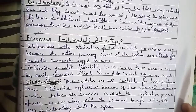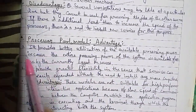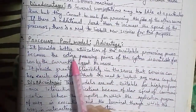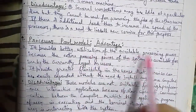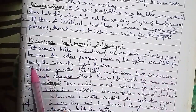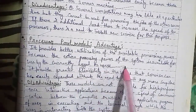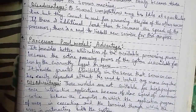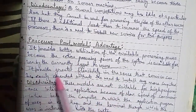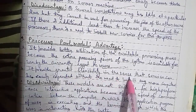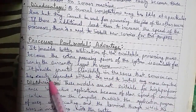The processor pool model provides better utilization of available processing power. Previously, the entire processing power of the system was only used by currently logged-on users, but now all available processing power can be utilized. It also provides greater flexibility in the sense that the service can be easily expanded without the need to install any more computers.